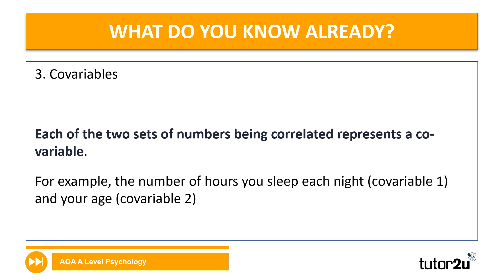Then we've got co-variables. Co-variables is a very important term in correlational research because in correlational research there is no independent and dependent variable — what you are measuring are co-variables. The co-variables are the two sets of numbers being correlated, or the values you're looking to see if there is a relationship between. For example, number of hours you sleep each night and your age are two different co-variables.